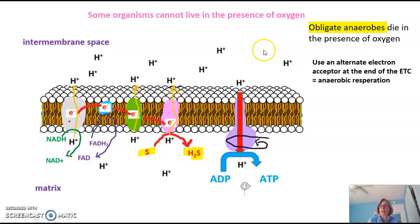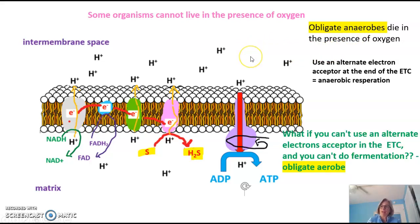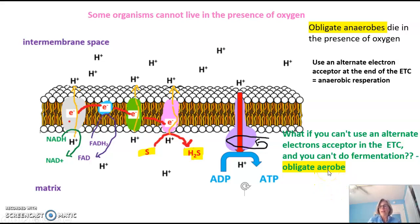Cells that cannot live in the presence of oxygen are called obligate anaerobes — they actually die in the presence of oxygen. But what if you can't use an alternate electron acceptor in the electron transport chain, and you can't do fermentation as a plan B? Then you are what we call an obligate aerobe — these cell types can only live in the presence of oxygen. A classic example is our human brain cells: without oxygen, human brain cells die.